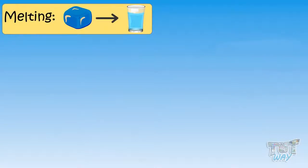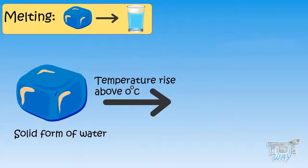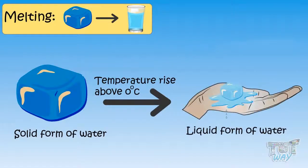Now let's see how the solid form of water changes back to a liquid form of water. When the solid form of water, that is snow or ice, gets enough heat that its temperature rises above zero degrees, it changes back to liquid form. And the process is called melting.